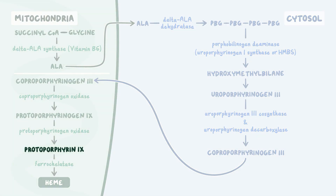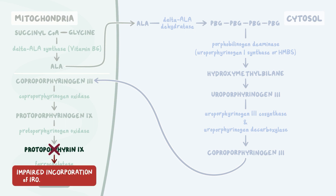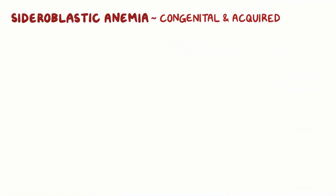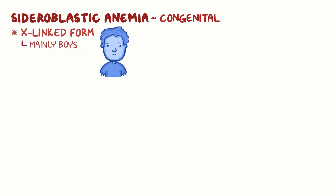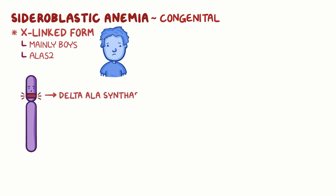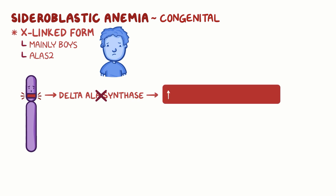Now, with sideroblastic anemia, there is defective protoporphyrin synthesis, which results in impaired incorporation of iron to form heme. Sideroblastic anemia can be congenital or acquired. The most common congenital cause is an X-linked form, which means it happens on the X chromosome, and affects mainly boys since boys only have one copy of the X chromosome. The X-linked form is caused by mutations in the ALAS2 gene, which codes for delta-ALA synthase. Without delta-ALA synthase, there's a buildup of iron and not enough normal heme production.